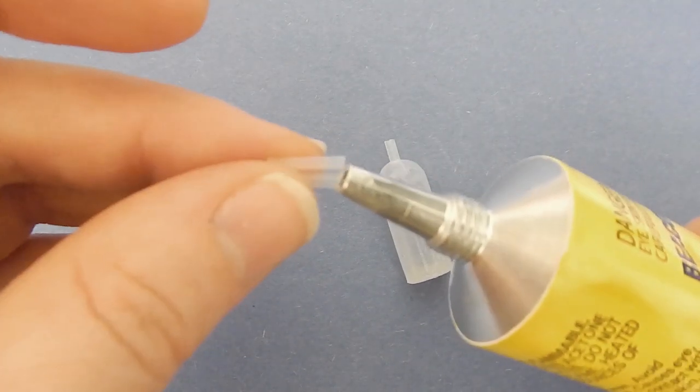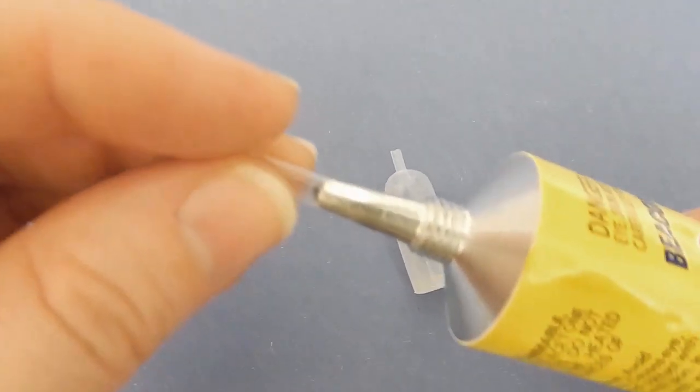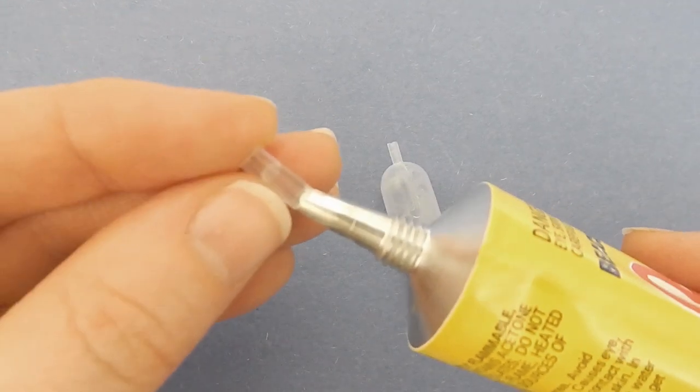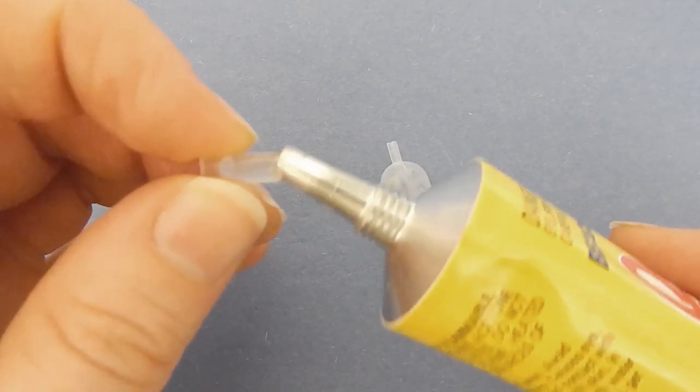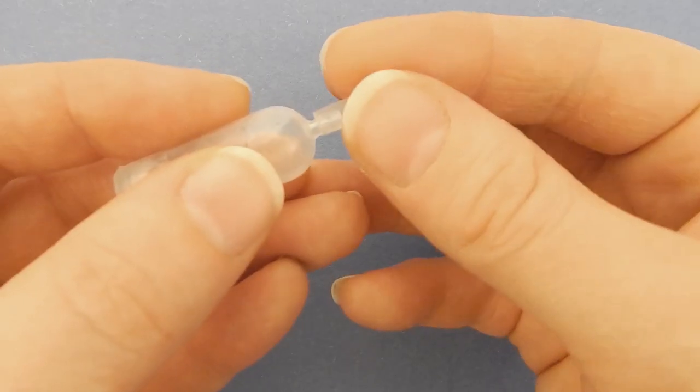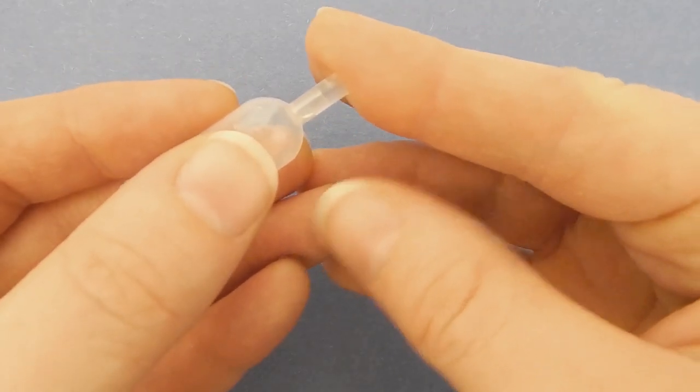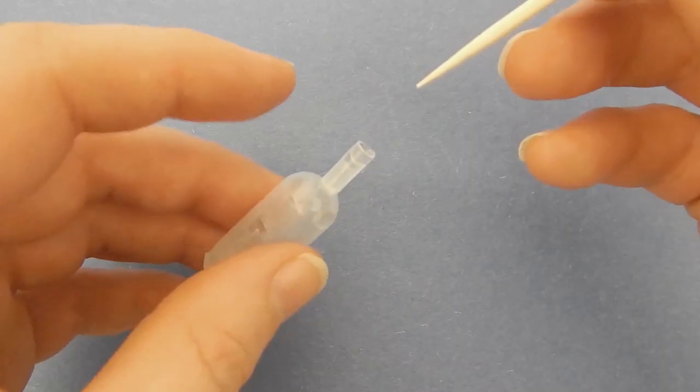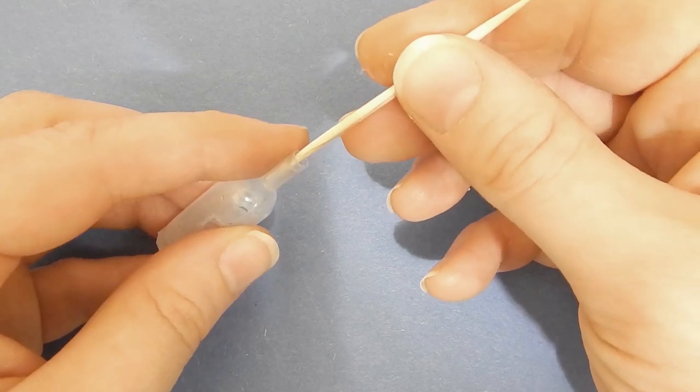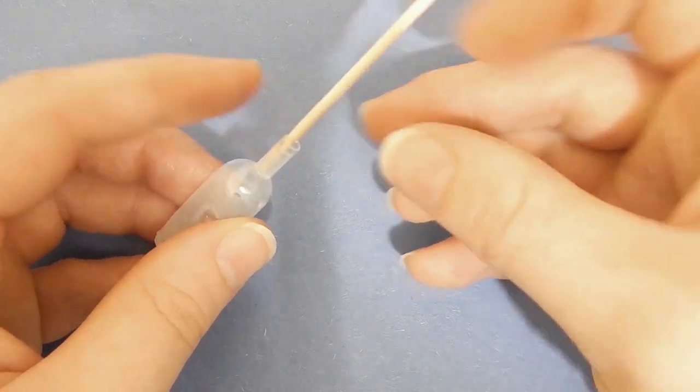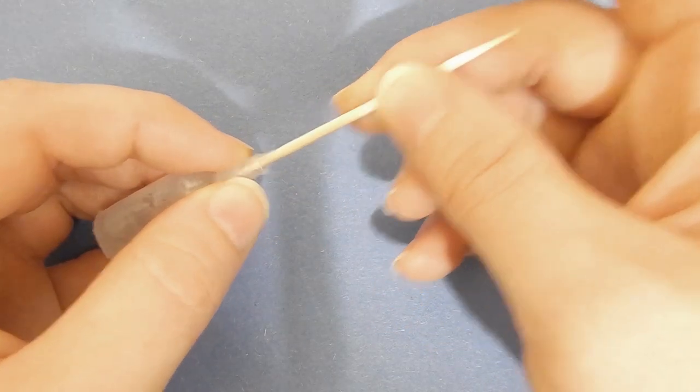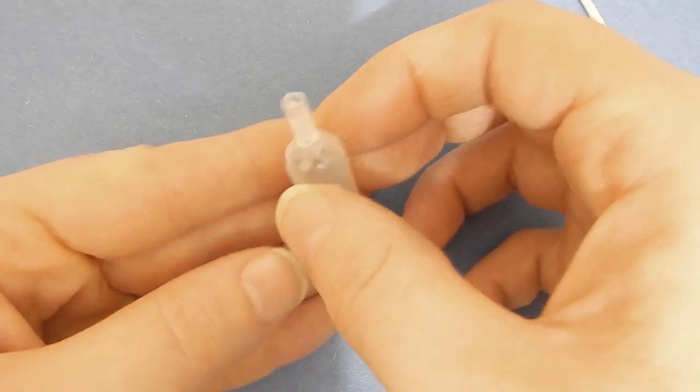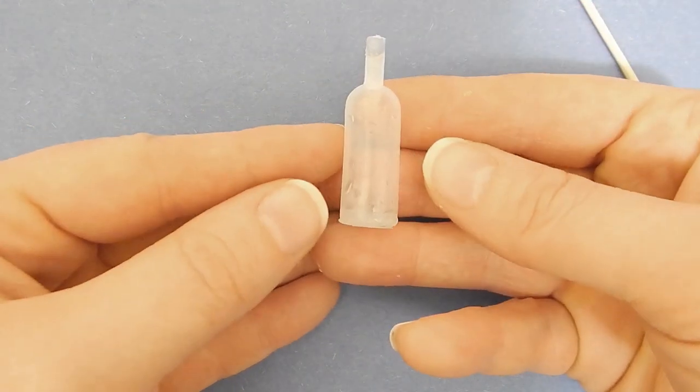I'm using quick grip glue and I'm going to fill the straw piece about halfway. Using a toothpick to clear the hole, making sure there's no glue clogging the hole. Now just let it sit there for about 30 minutes or longer.